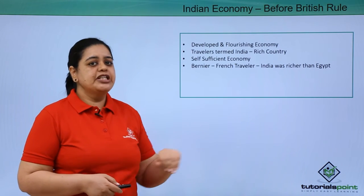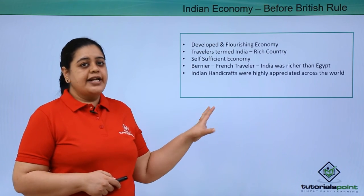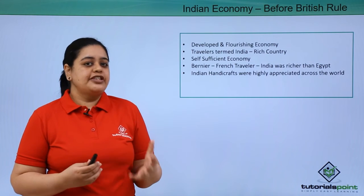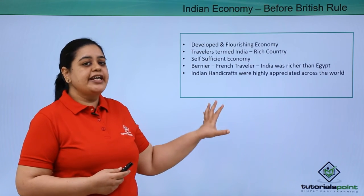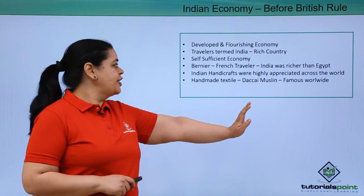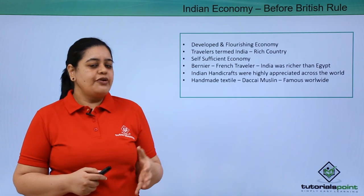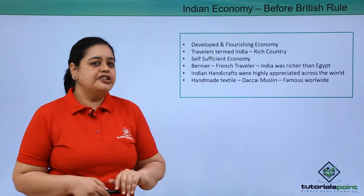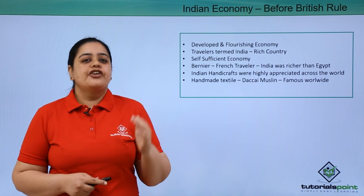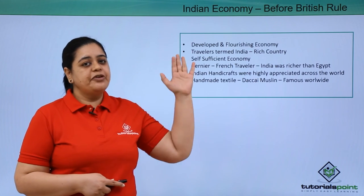When Bernier visited, he exclaimed that India was much richer and more prosperous than Egypt. The craftsmanship and handicrafts of India were highly appreciated across the world. There was a specific cloth known as Dhaka muslin — popularly called malmal in Hindi — a very soft cloth produced only in India, famous worldwide. People used to come and buy it. The handmade textile industry was quite famous across the world. This was the state of the Indian economy before British rule.